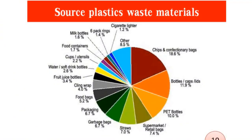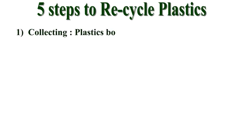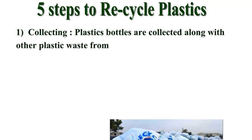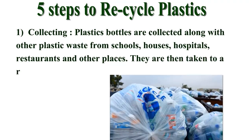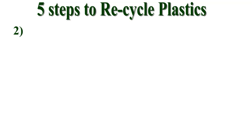Now let's go through how plastics are recycled. There are five steps. Step 1 — Collecting: Plastic bottles are collected along with other plastic waste from schools, houses, hospitals, restaurants, and other places. They are taken to a recycling center, where people collect all the plastic from waste bins and dustbins.